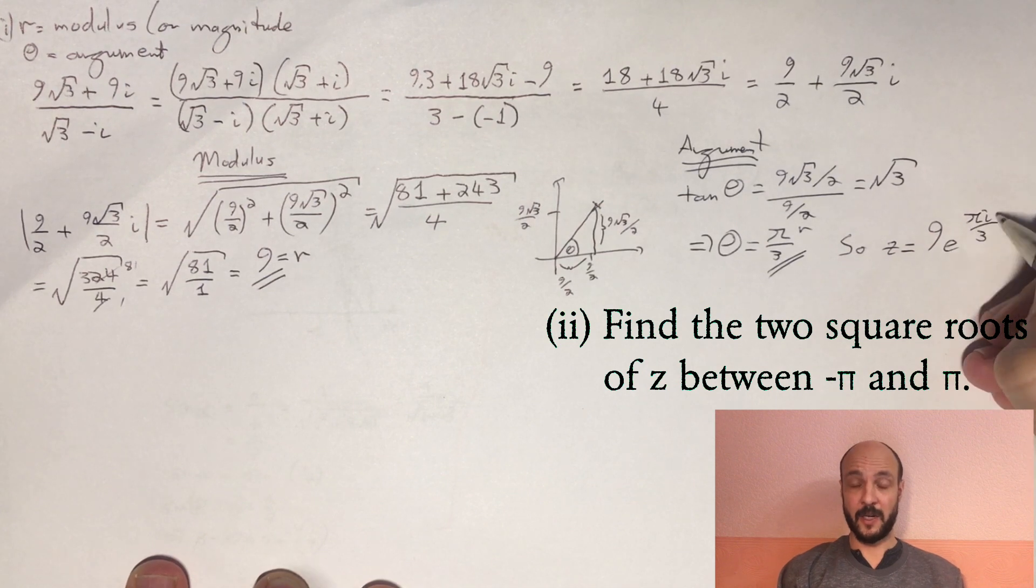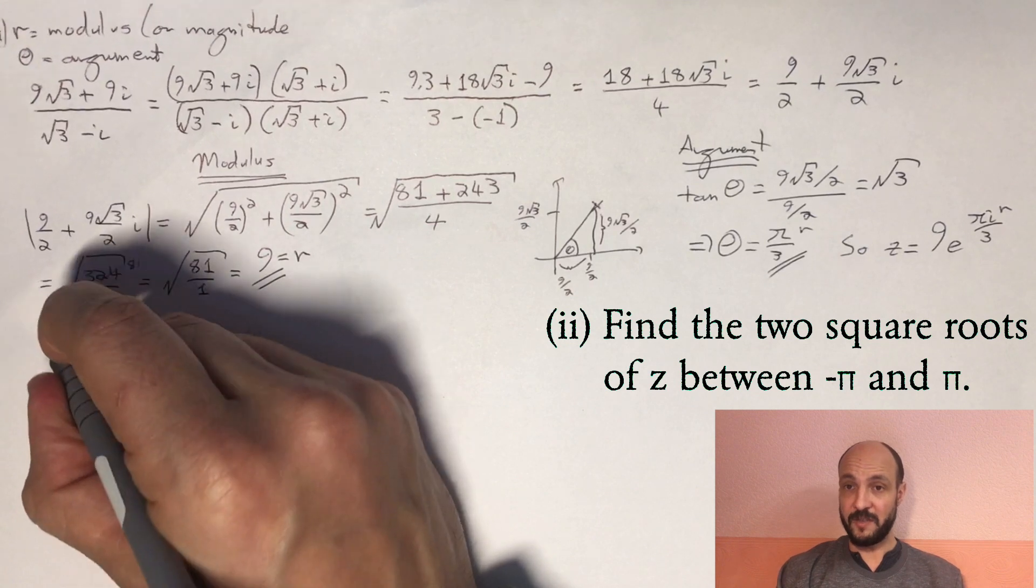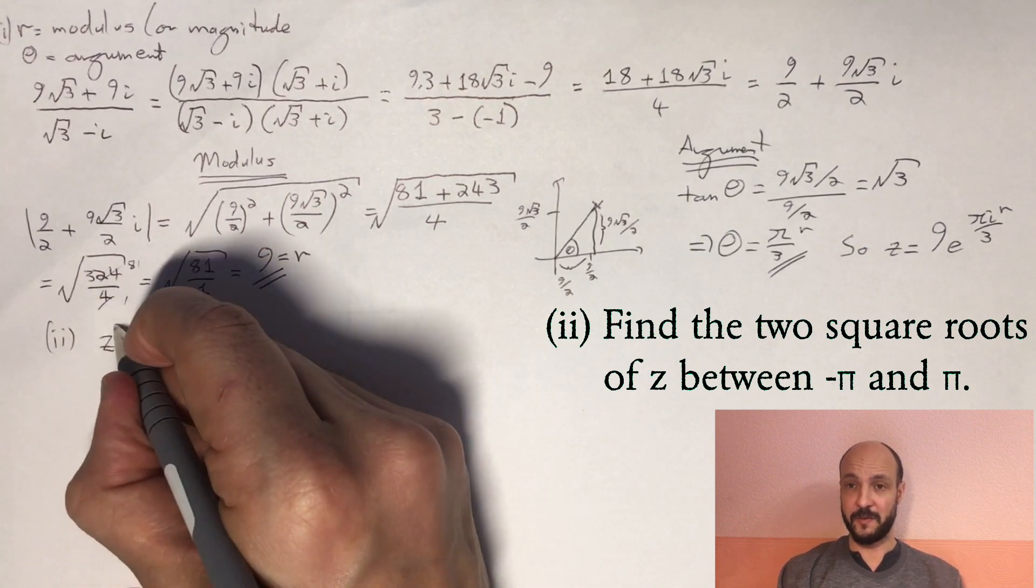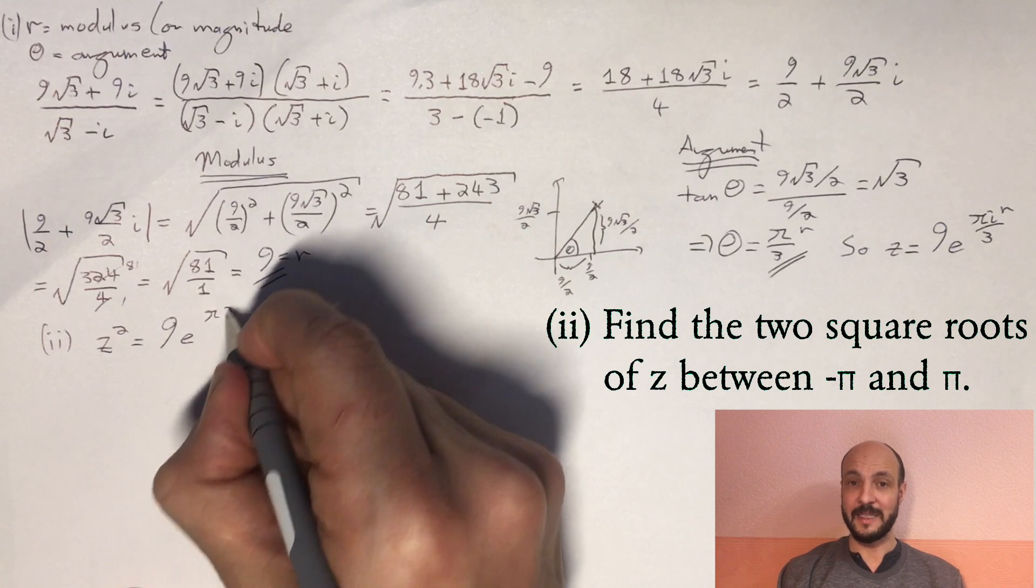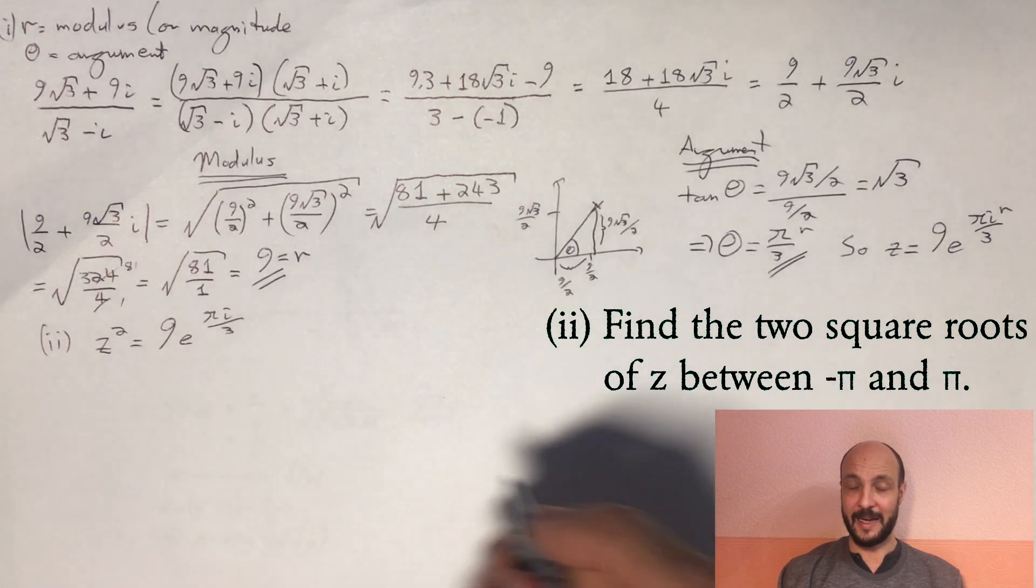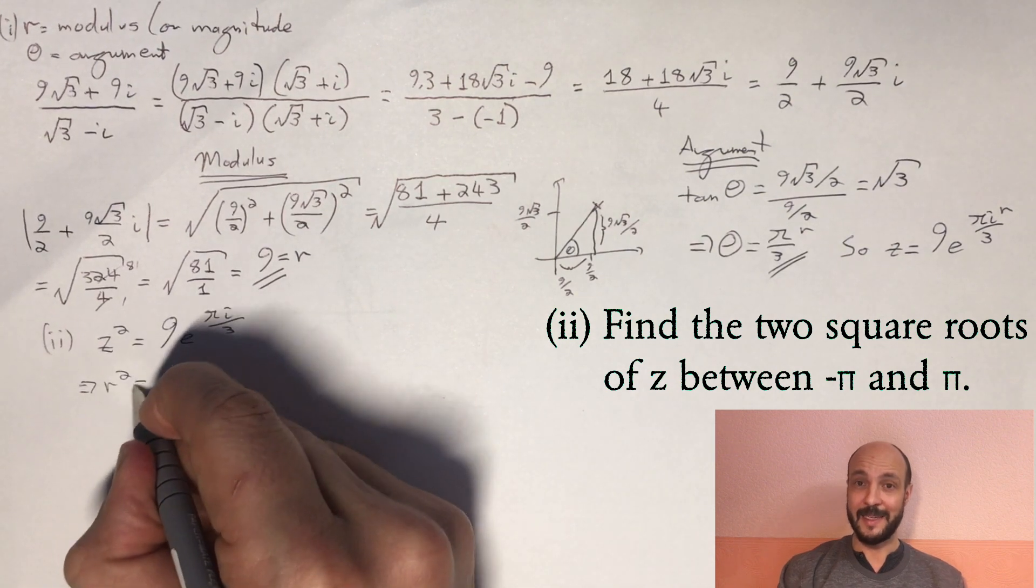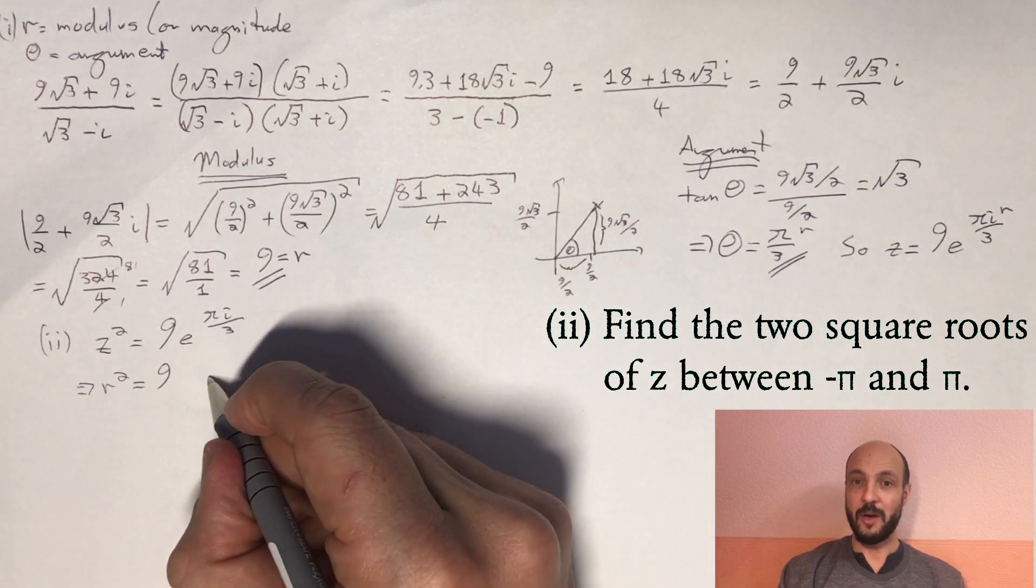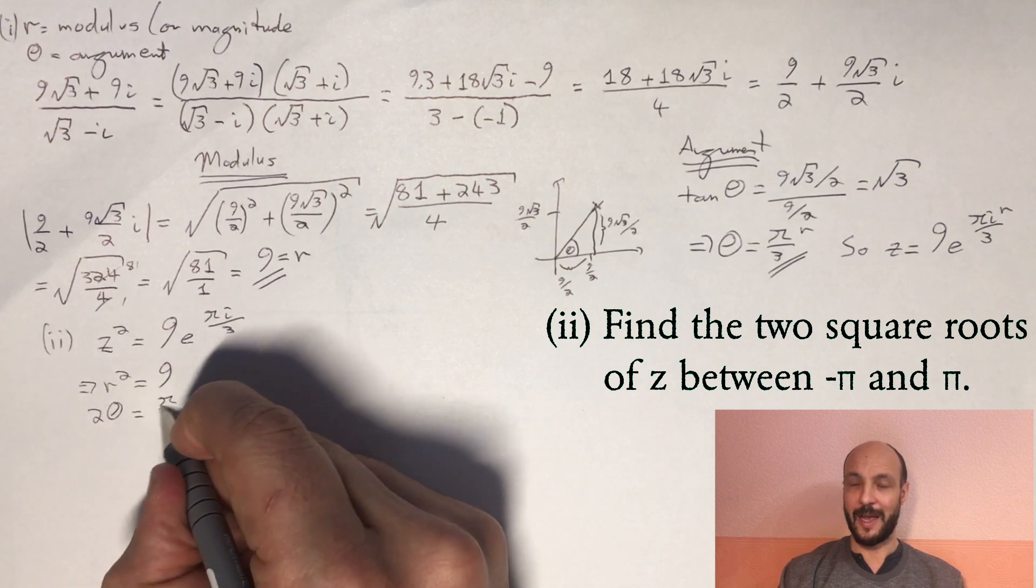For the second part of our question, we want to get the two square roots of z. We can use the fact that we now know it's in exponential form to make this part easier. So if z² is equal to 9e^(πi/3), then we know that r² is 9, and we know that 2θ equals π/3 + 2nπ.